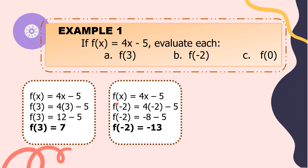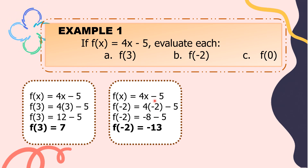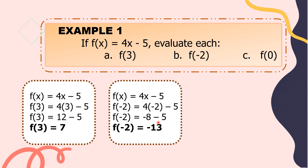For letter B, our function is still f of x equals 4x minus 5. We evaluate f of negative 2, so we change x into negative 2. f of negative 2 equals 4 times negative 2 minus 5. 4 times negative 2 is equal to negative 8. Negative 8 minus 5 is equal to negative 13. So, f of negative 2 is equal to negative 13.